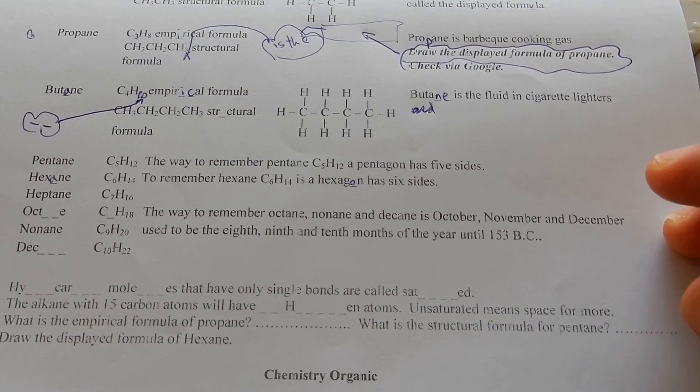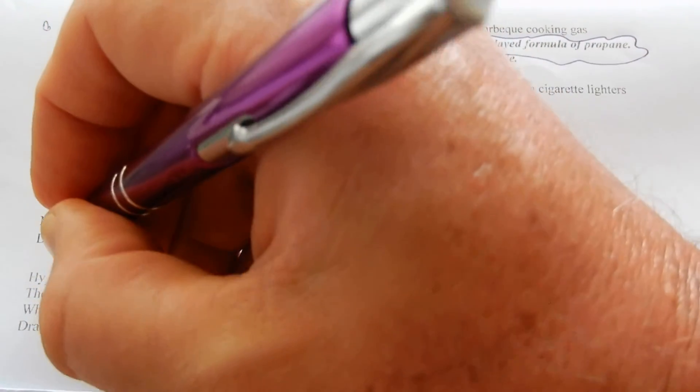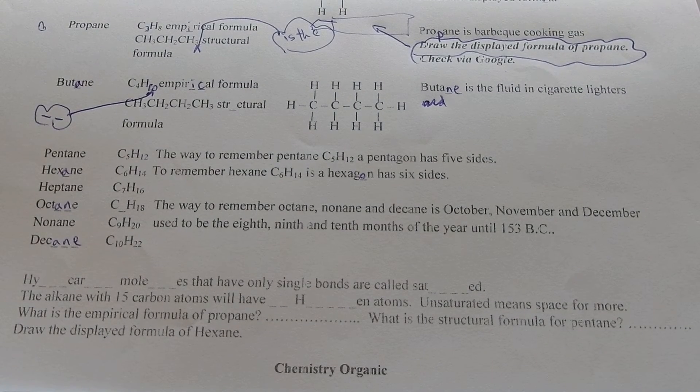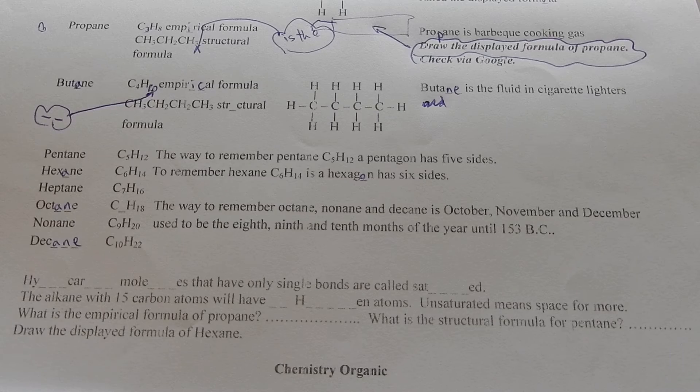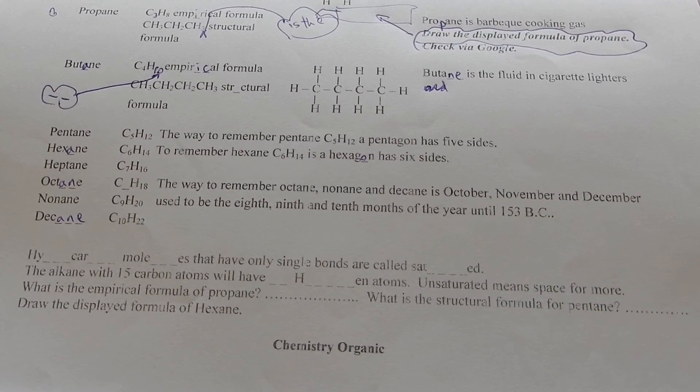Heptane, octane, nonane, decane. Heptagon has seven sides. The way to remember octane, nonane and decane is October, November and December used to be the 8th, 9th and 10th month of the year until 153 BC.